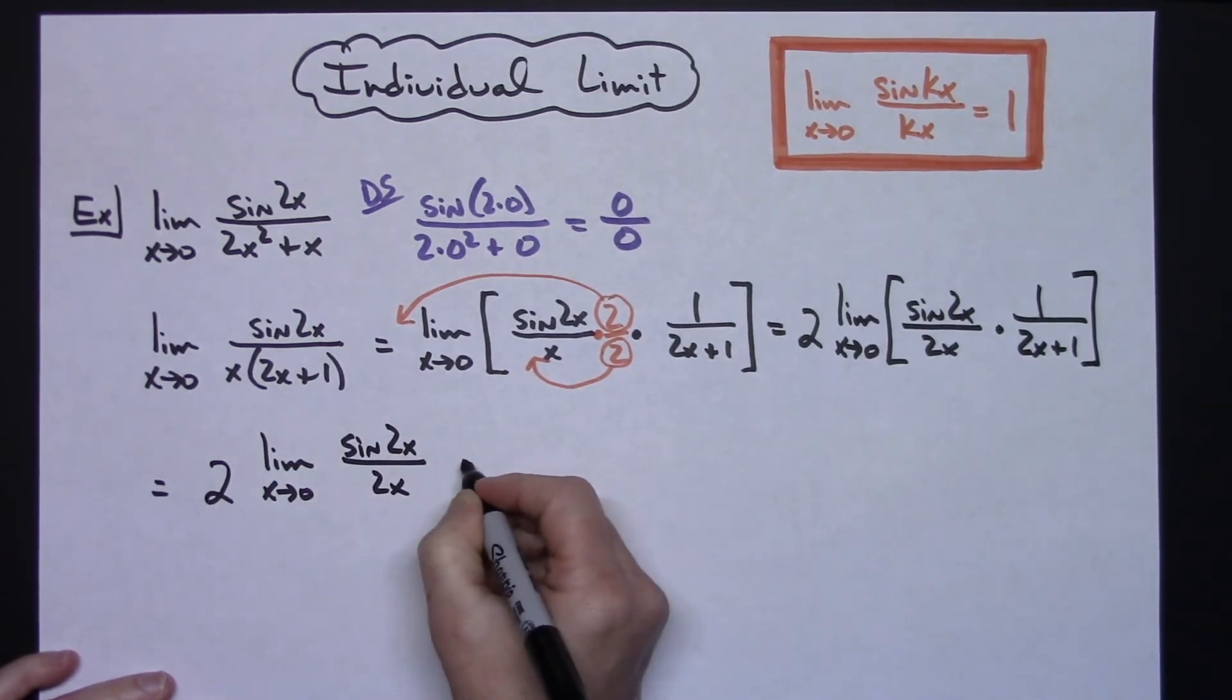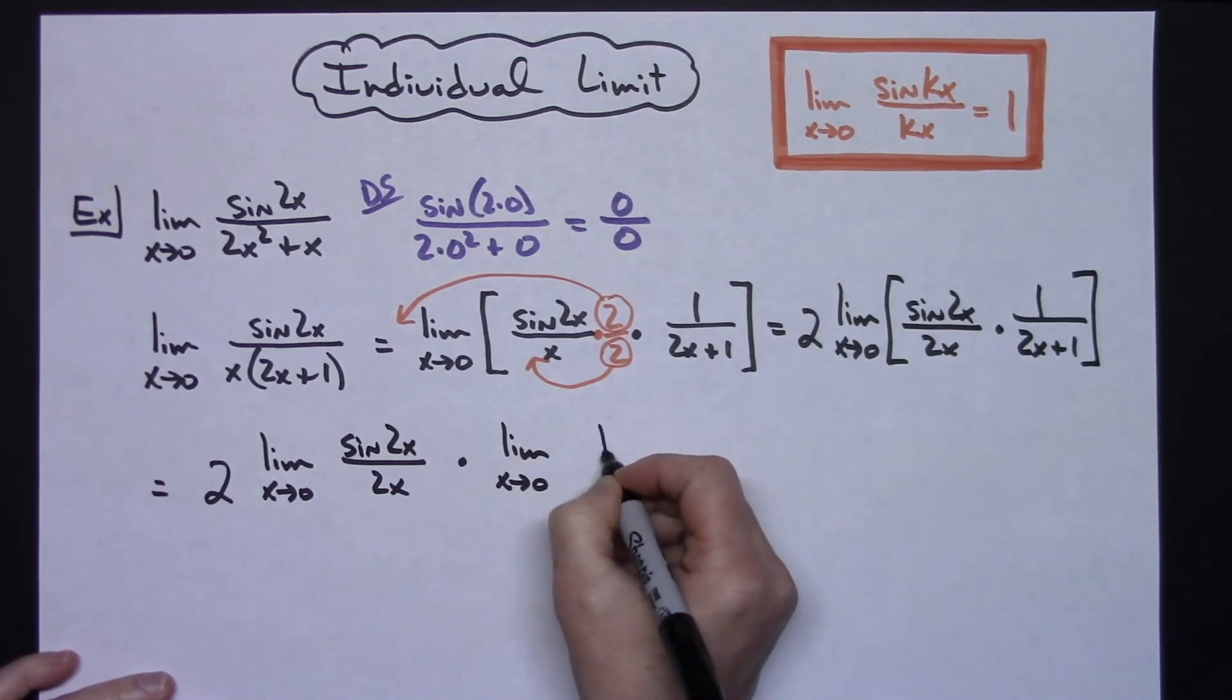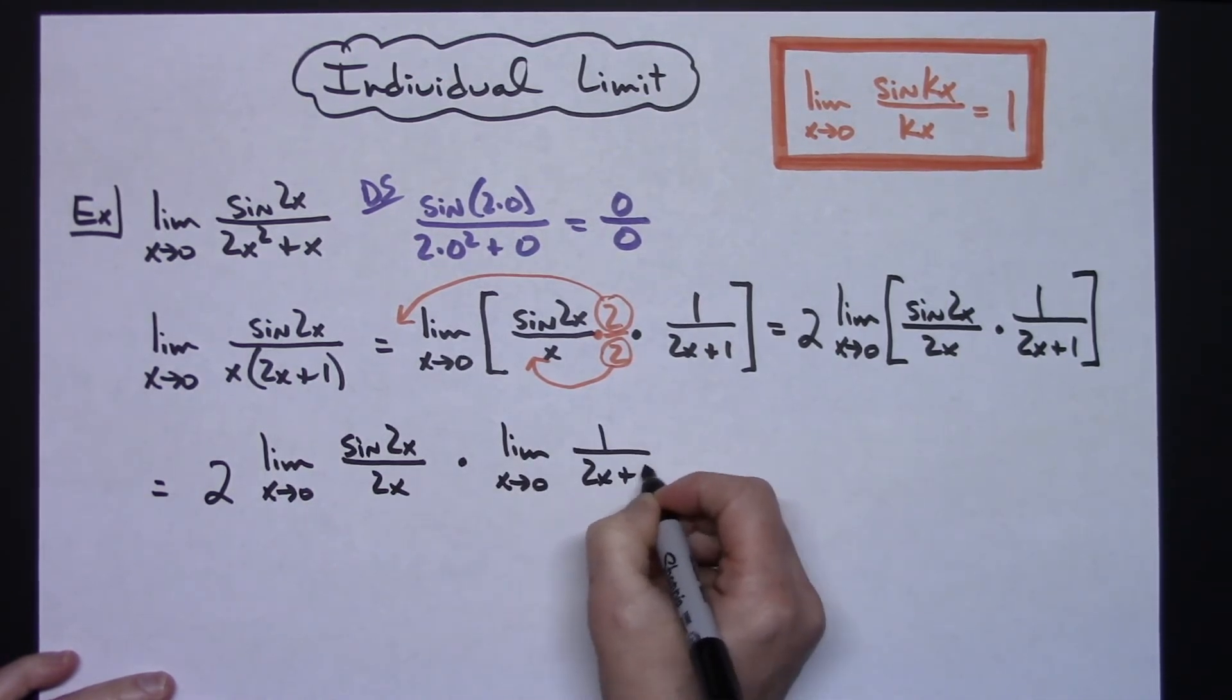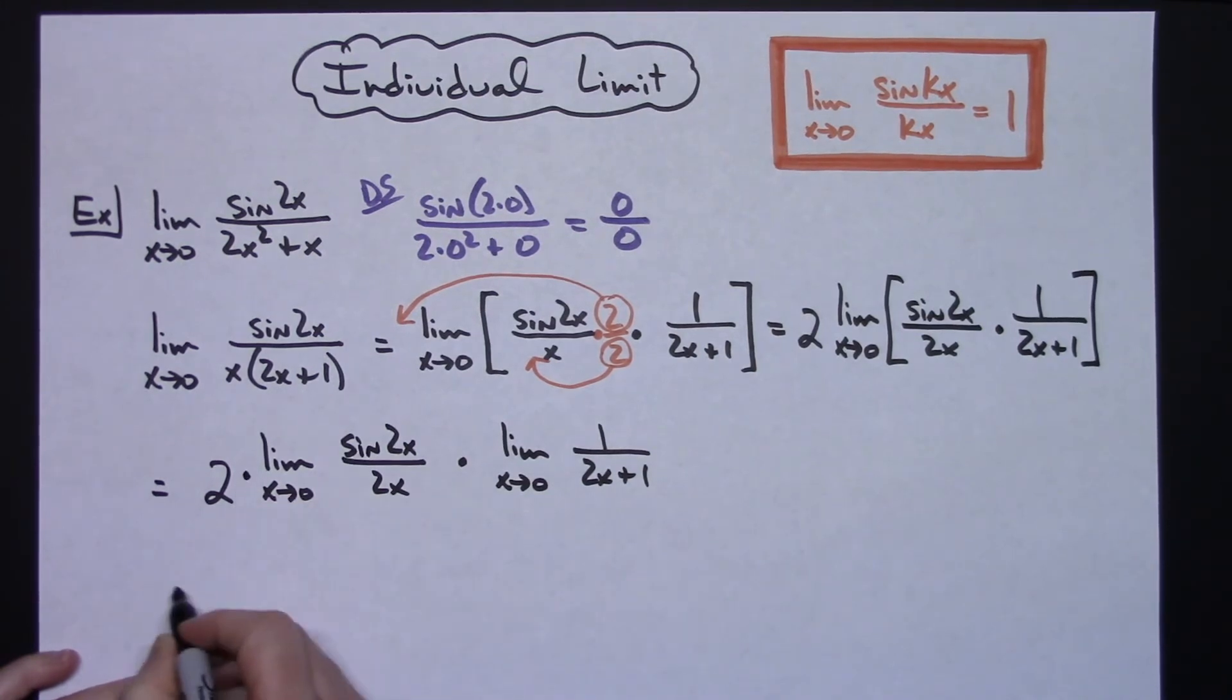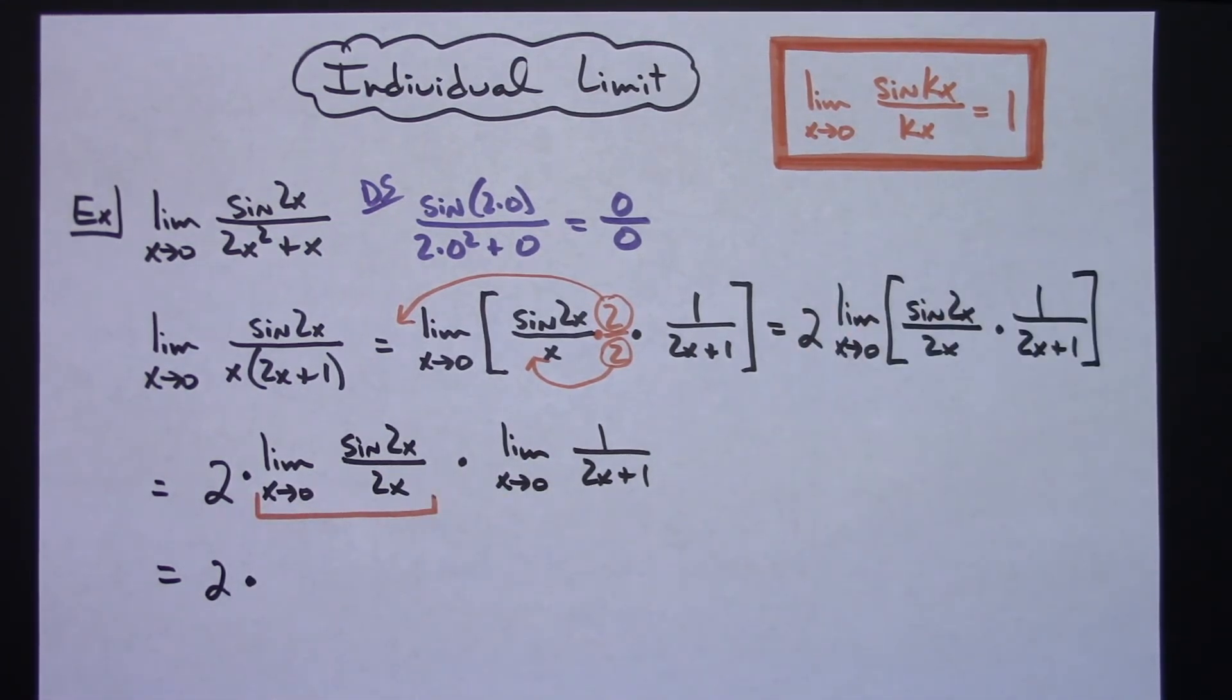2 is just 2. This right here is our given limit that we know is 1, so that's an easy computation right there. And then this I'm going to do a direct substitution at this point. So I would have a 1 over 2 times 0 plus 1, which will just leave me a 1 right there. So I would have a 2 times 1 times 1, which gives me an overall limit of 2.